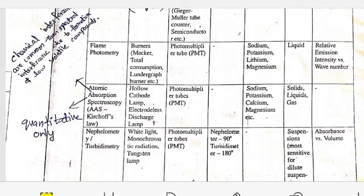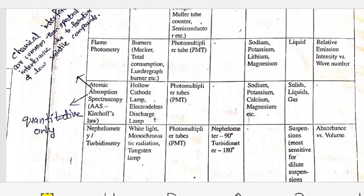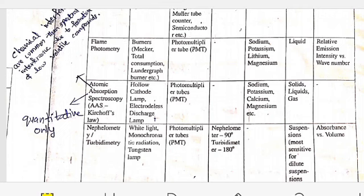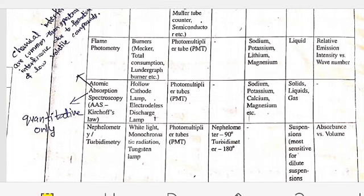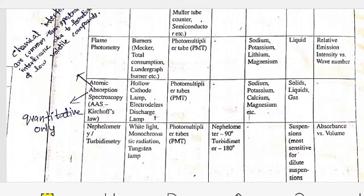Nephelometry and turbidimetry use white light, monochromatic radiation, and tungsten lamp as sources. Photomultiplier tube is the detector. In nephelometry we maintain 90 degrees, and in turbidimetry we use 180 degrees. Suspensions can also be used - very important. Suspensions are used by nephelometry or turbometric detection. The graph is absorbance versus volume.